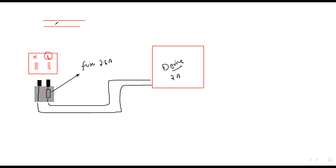The fuse depends on current because current has a heating effect — the greater the current, the greater the heating effect. The live wire is the one in which the charges are vibrating, meaning it has live energy. The neutral wire has charges that are not vibrating. When you connect a device between the live wire and neutral wire, energy transfers to the device and the remaining energy transfers through the neutral wire to complete the circuit.